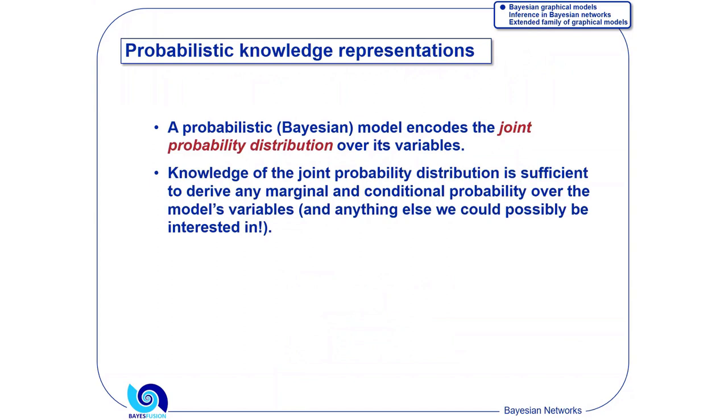To start with, you remember I talked about the importance of modeling the joint probability distribution because with the joint distribution, we can do a lot of cool things like prediction. The Bayesian model, the probabilistic model, essentially encodes the joint probability distribution over its variable. That's it. Very brief definition. If you have the joint, you can do anything with it.